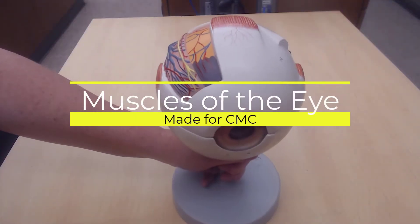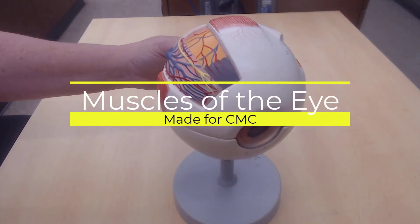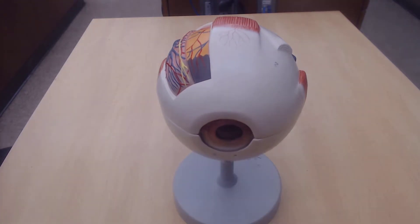This is the human eye. Now the human eye has some muscles that you'll need to know. Rectus means straight.